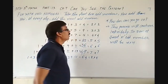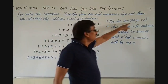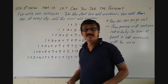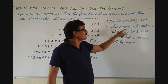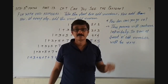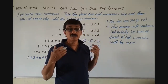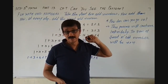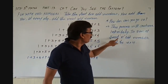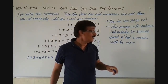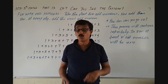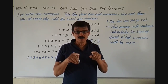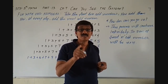How far can you go? This process will continue infinitely, because there are infinite odd numbers. So the sum of the first N odd numbers will be N multiplied by N.